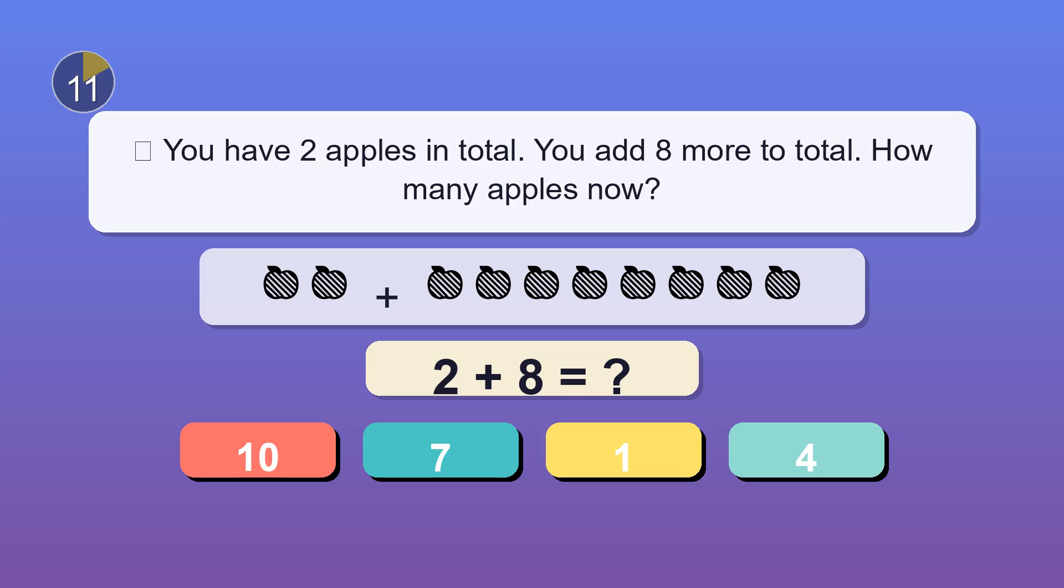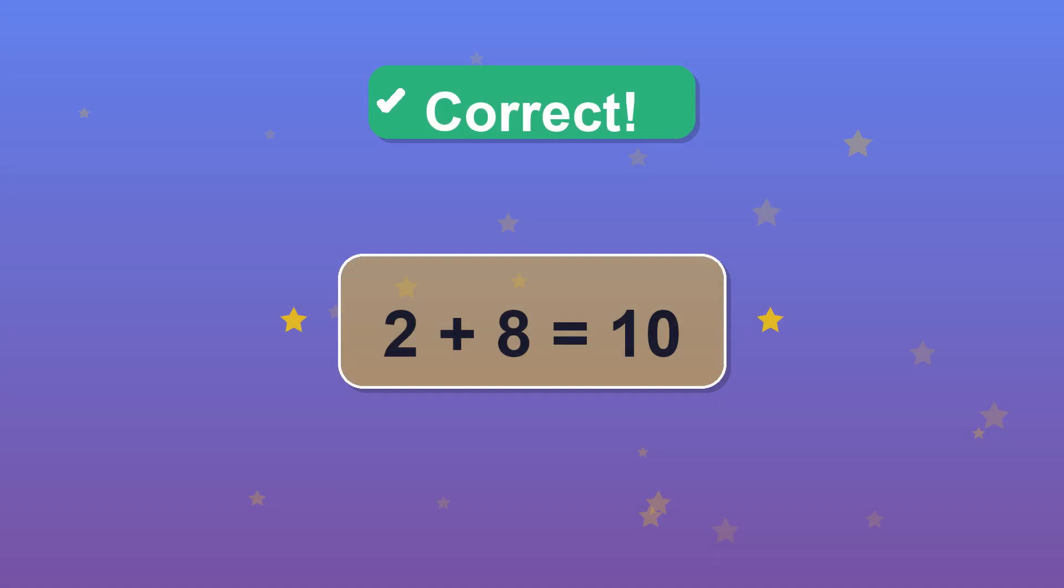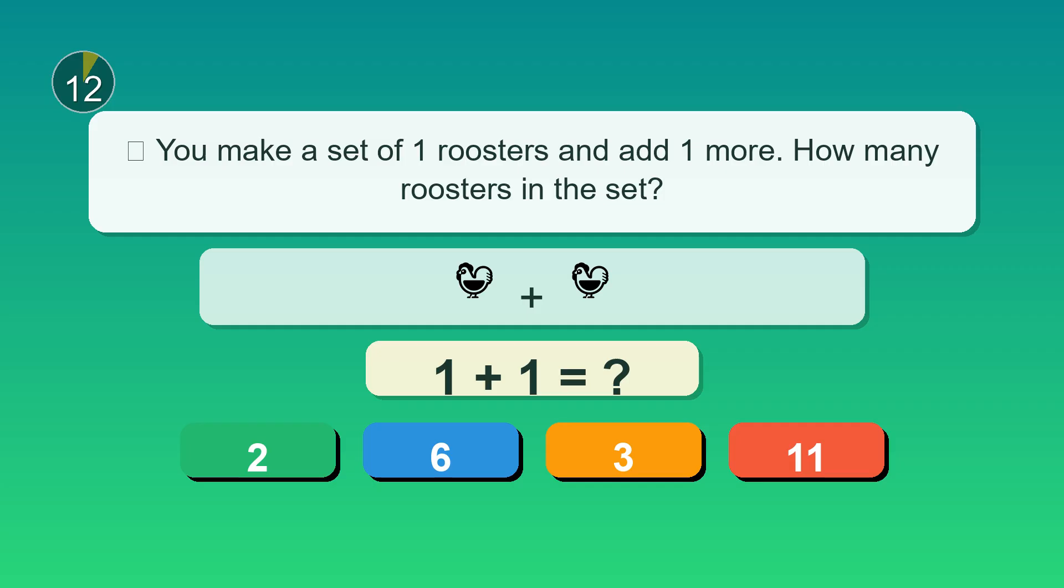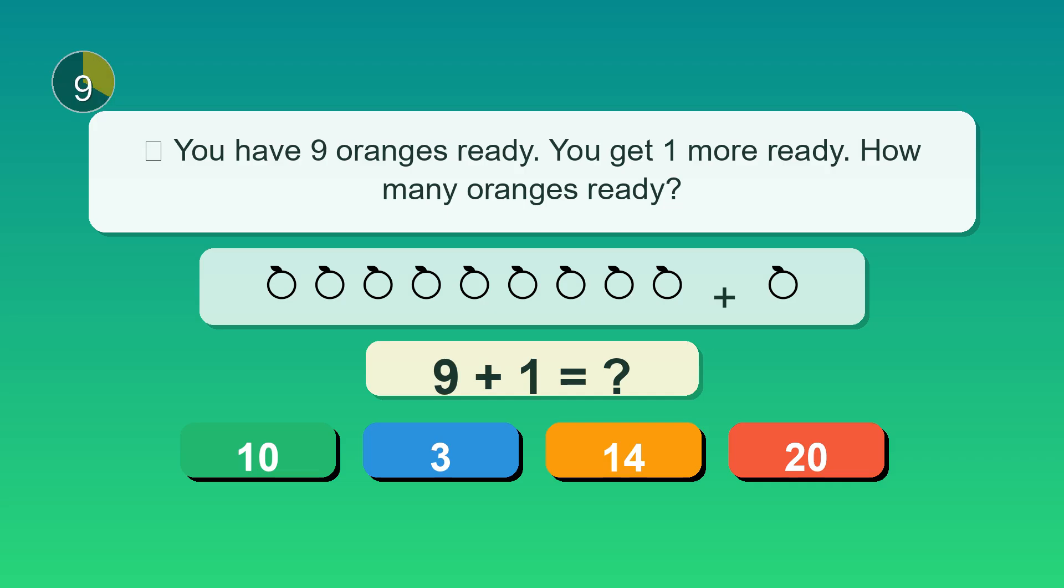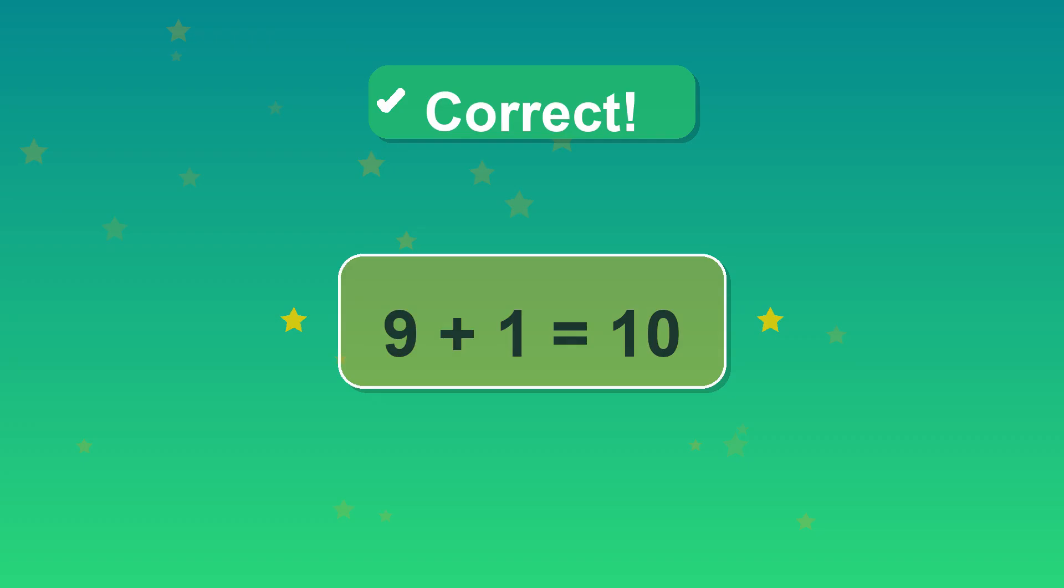You have two apples in total. You add eight more to total. How many apples now? 10. Great catch. You make a set of one roosters and add one more. How many roosters in the set? The answer, two. You have nine oranges ready. You get one more ready. How many oranges ready? Bingo. Ten.